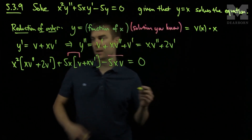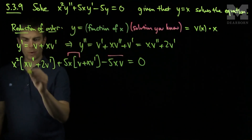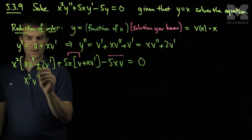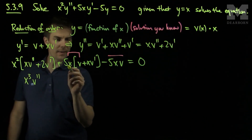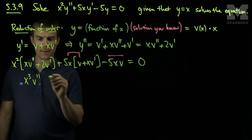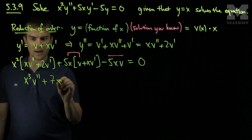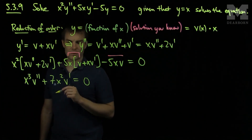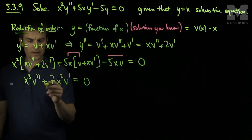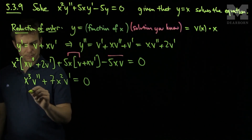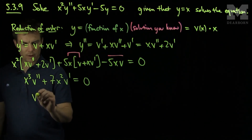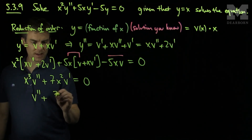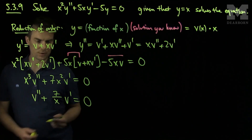Now if we simplify this, we have x cubed v double prime plus 2x squared v prime plus 5x squared v prime, which is a total of x cubed v double prime plus 7x squared v prime equals zero. We can divide through by x squared to get the linear form: v double prime plus 7 over x times v prime equals zero.